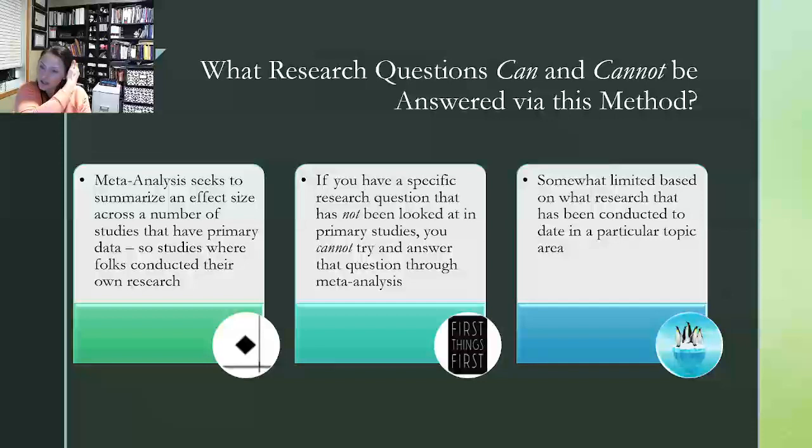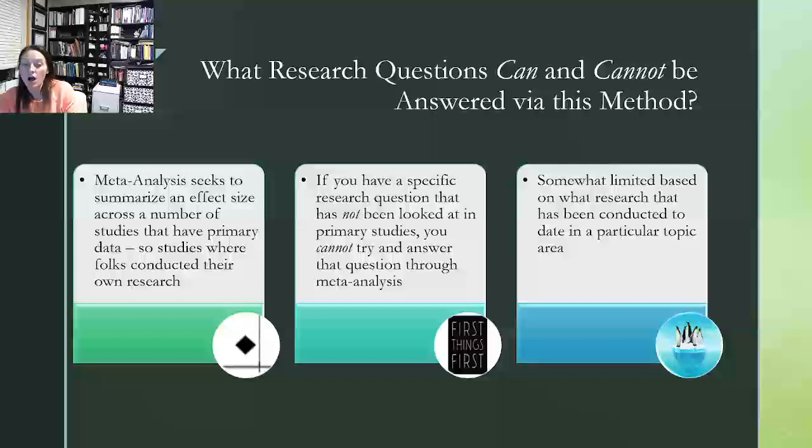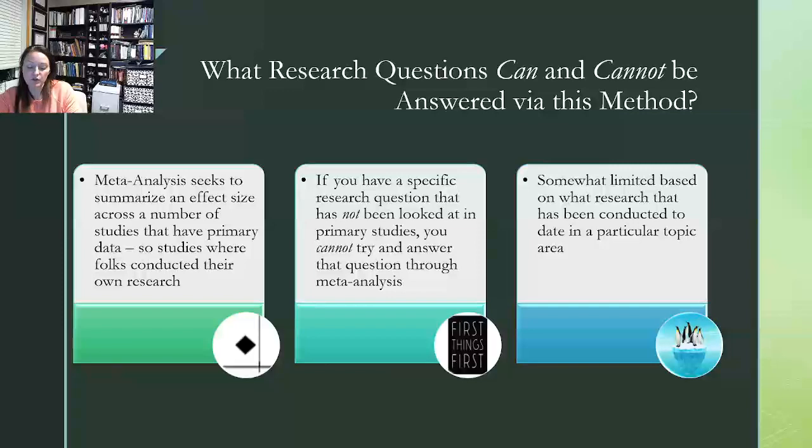So this is where it can get kind of challenging. And so I like to talk about this in the very first lecture. What research questions can and cannot be answered with meta-analysis? Remember that meta-analysis is going to seek to summarize and provide one effect size across a number of studies. These studies are going to have primary data. So essentially studies that reflect primary research. Folks who conducted their own research study. Meta-analysis is actually a form of secondary research. So what we would be doing is summarizing other folks' research. And so let's say that you have a research question. And it's really interesting, but it hasn't yet been researched in primary studies.